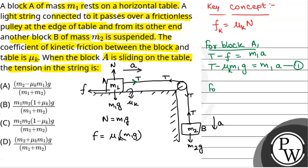Now for block B, the acceleration is downward and M2·g is the driving force. So: M2·g minus tension equals M2·A. Let us call this Equation 2.